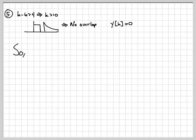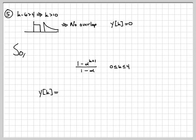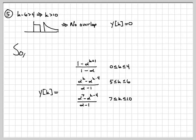So we've computed all the different regions. For shorter signals, it might have been simpler to just plug in values one by one. But for slightly longer signals, the reflect, shift, and sum approach is better. Piecing it together: y(k) equals the first expression for 0 ≤ k ≤ 4, the second expression for k = 5 and 6, the third expression for 7 ≤ k ≤ 10, and 0 everywhere else.